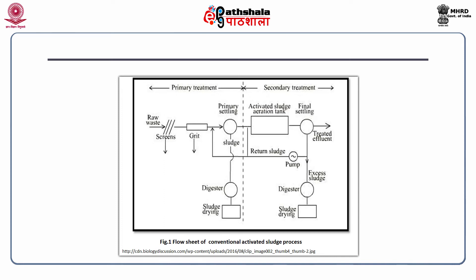From here, wastewater goes to the activated sludge aeration tank, where secondary treatment starts with the activated sludge process. A part of the settled sludge is returned back to maintain the microbial population in the activated sludge aeration tank, and the rest of the sludge goes to the sludge drying beds.